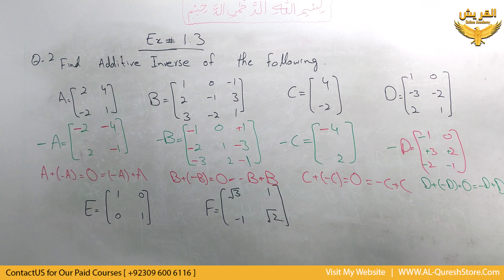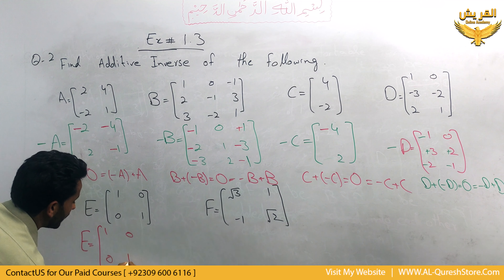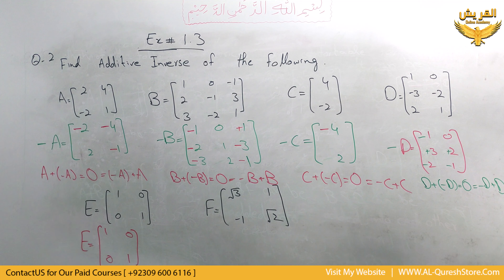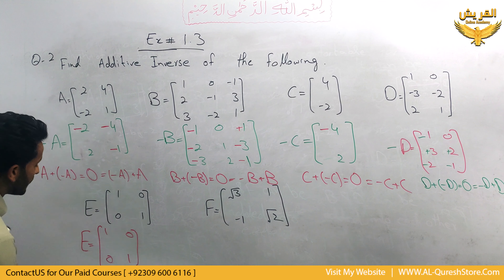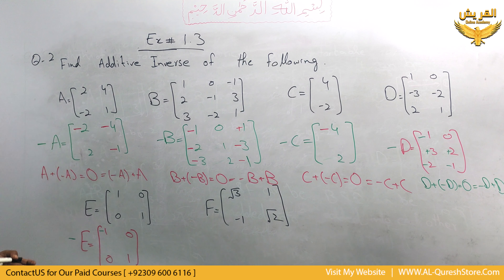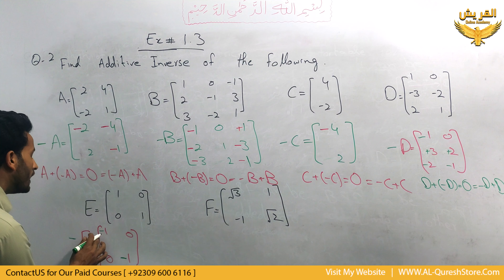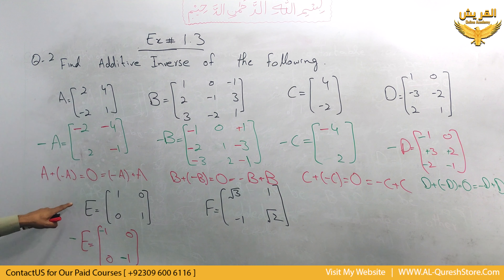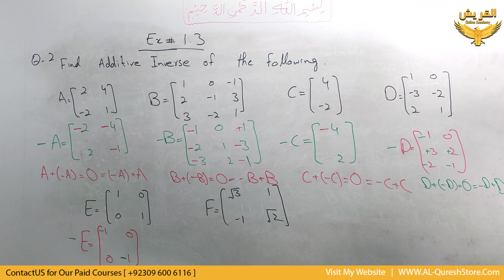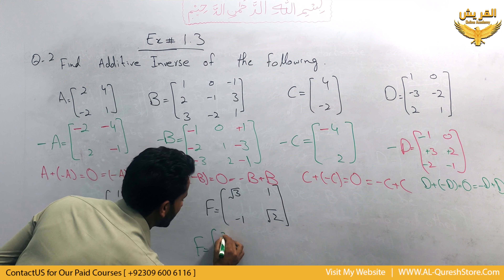For matrix e, e equals 1, 0, 0, 1. For the additive inverse of e we use minus e and change the sign of all elements: 1 becomes minus 1, 0 cannot change its sign so it remains 0, and 1 becomes minus 1. So the additive inverse of e is minus 1, 0, 0, minus 1.